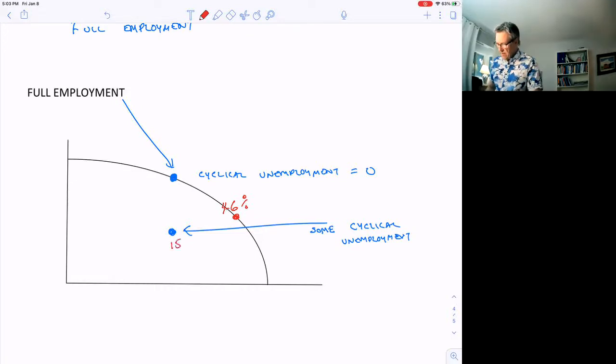Higher than that means that we have cyclical unemployment and we're inside the PPF. So a point down here might be something like 15 percent. The higher it is, the further we're going to be inside the PPF. Something really low, like three and a half percent, means we're actually outside the PPF. We've gone beyond the potential output. It's not sustainable to stay out there. But temporarily, we can go beyond the PPF for a short period of time.